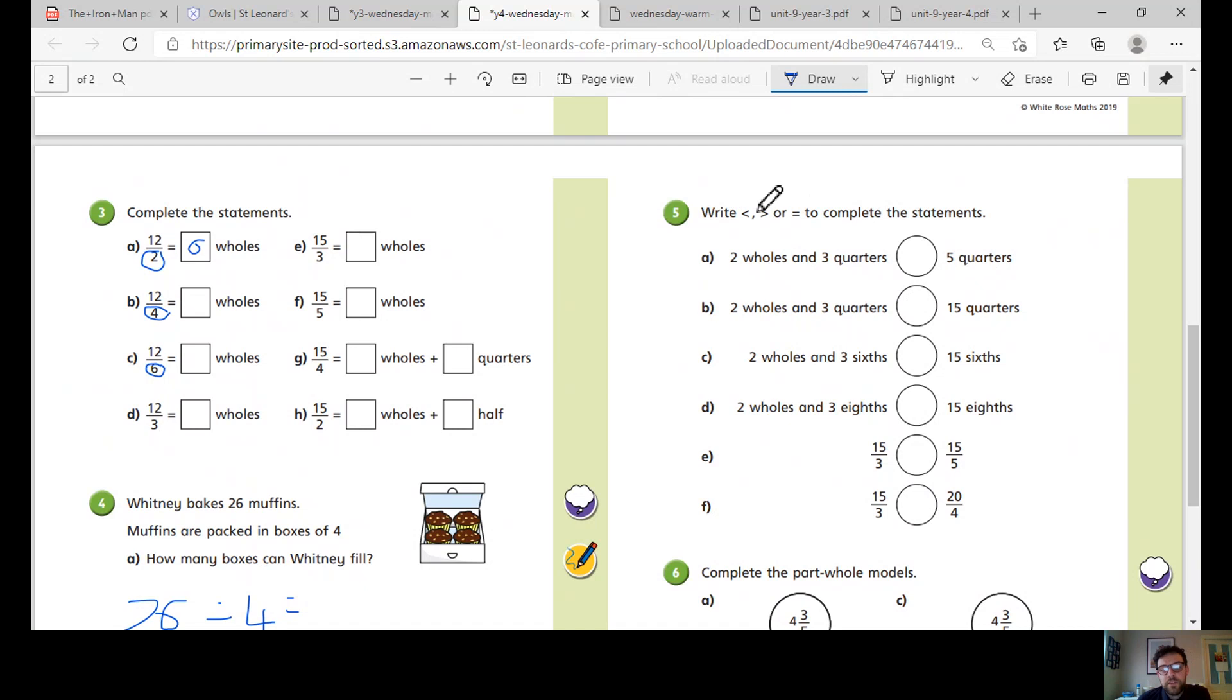Number five. Less than, greater than or equal to to compare these statements. Again, use your fractions to help you. Or let's work it out with our holes. So two holes and three quarters. So how many is that? So two holes. If it's split into quarters, there's four in each hole. So that would be four, five, six, seven, eight.